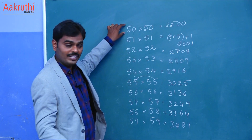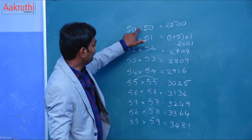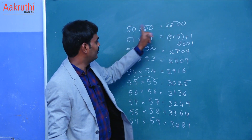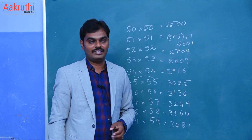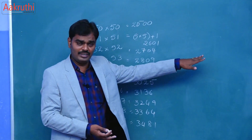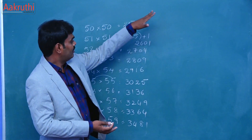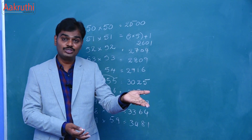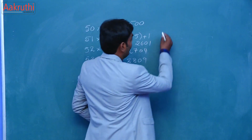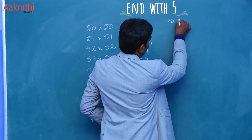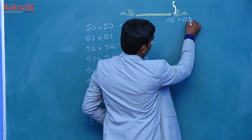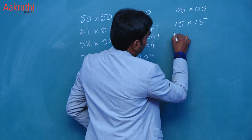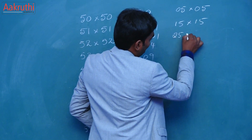The first step is multiply 5 into 5 and add the next digit, and multiply the next digit by itself. So this is one shortcut. The next one is for numbers that end with 5. We have 05, 15, 25 into 25.